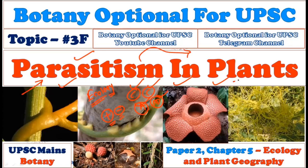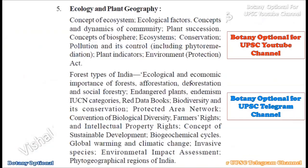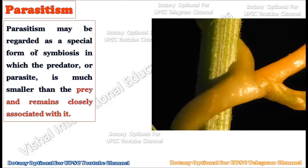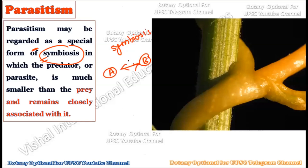We are studying ecology from the botany point of view — paper number two, chapter five: ecology and plant geography, under concept and dynamics of the community. Parasitism may be regarded as a special form of symbiosis. Under symbiosis, species A and species B always interact with each other, and this general interaction is called symbiosis. So parasitism is also a type of symbiosis.